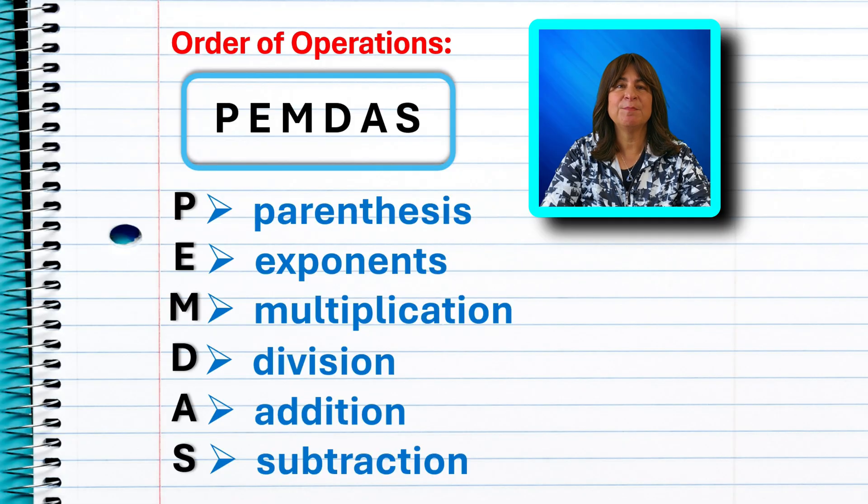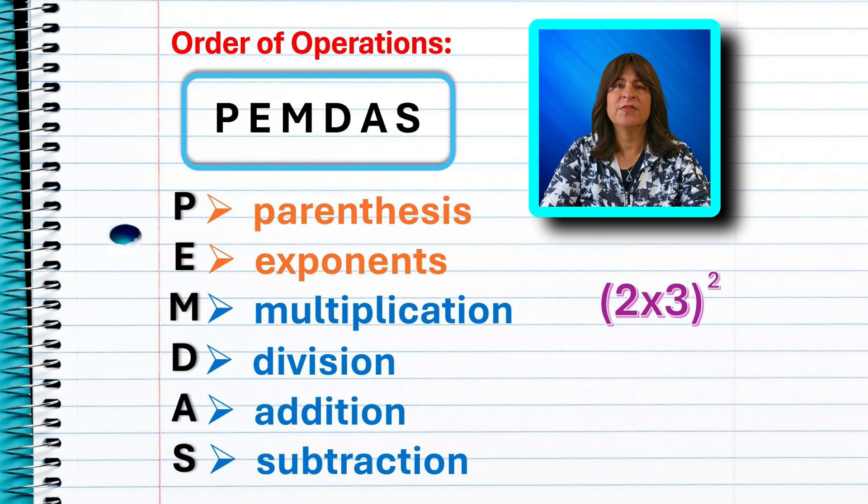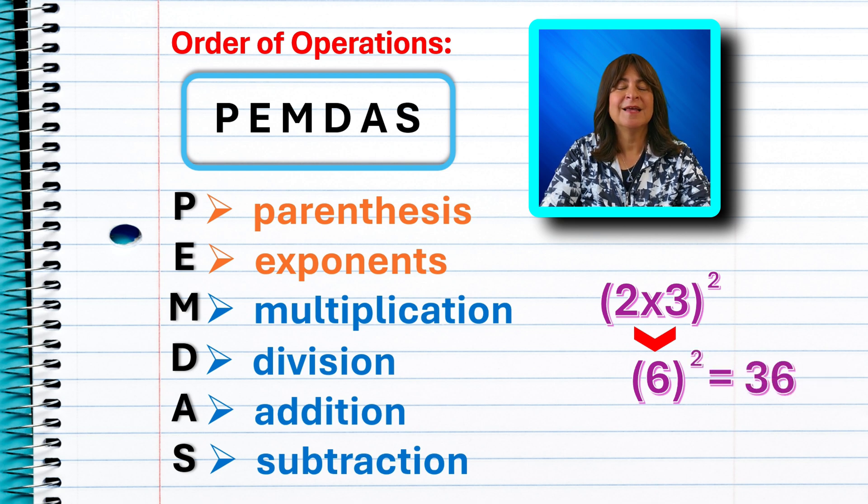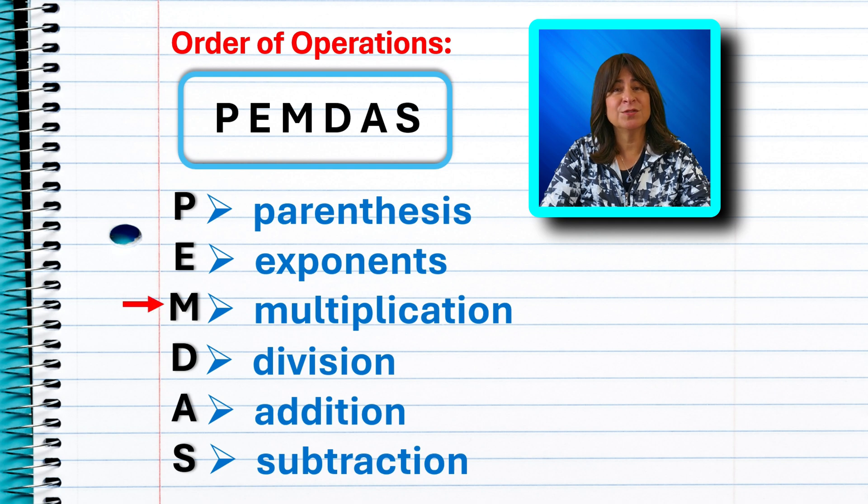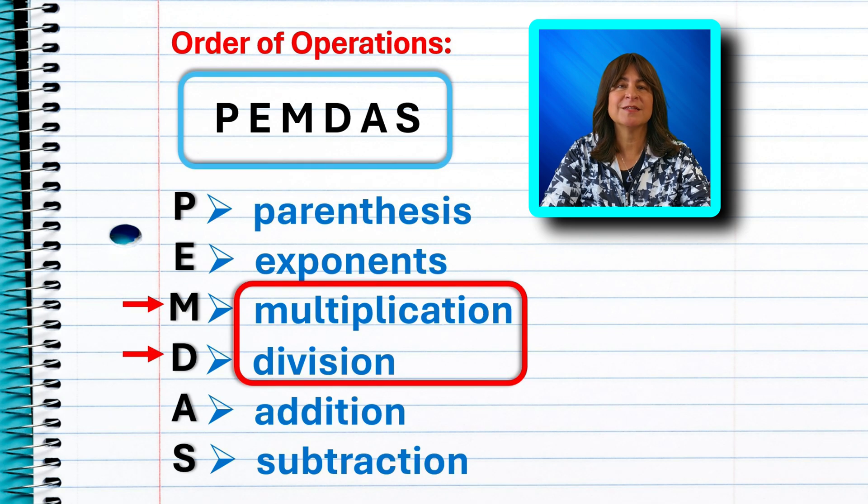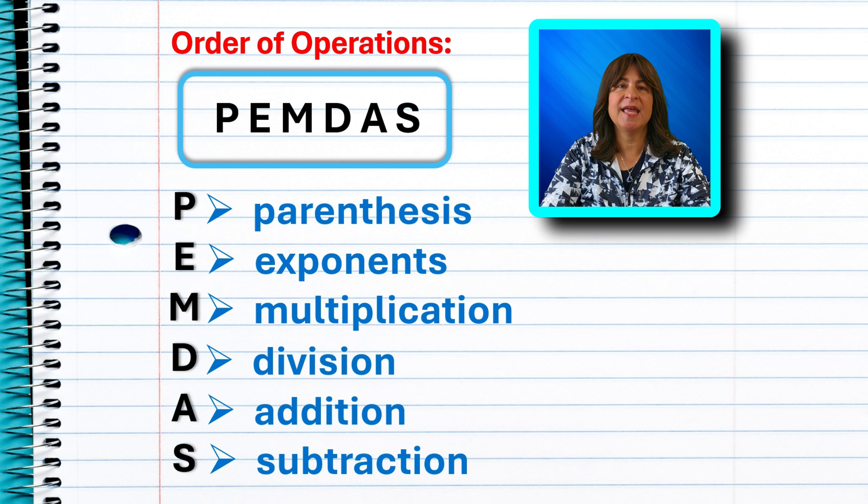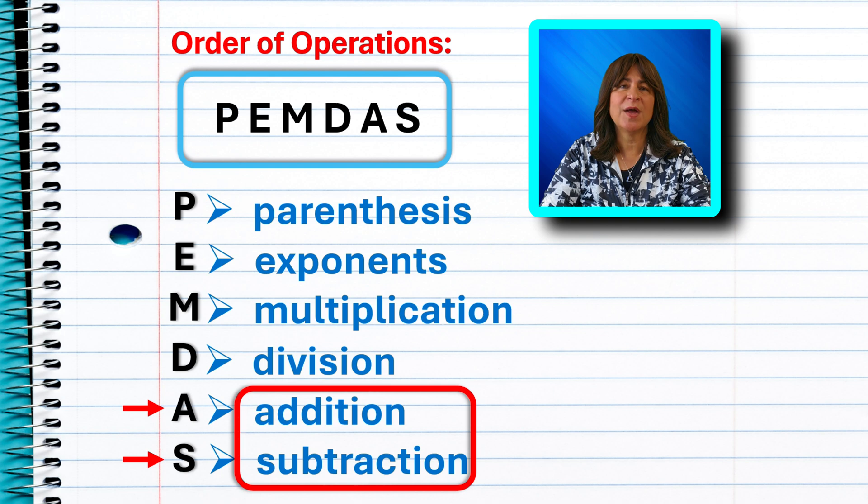So we already said that P is for parentheses. So that always goes first. And then E is for exponents. That's next. So for example, if we have 2 times 3 in parentheses squared, then we would first multiply 2 times 3 and get 6. And then 6 squared is 36. No controversy there, right? Next in PEMDAS is M, but also D. M and D go together. That's multiplication and division. They are considered to have the same status or standing. And next in PEMDAS is A and S addition and subtraction. A and S also go together. They also have equal standing.